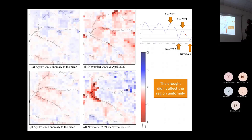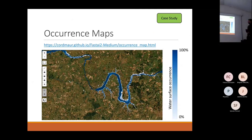This is another example of a product we provided: occurrence maps. This is also available at 10-meter resolution to see water dynamics.